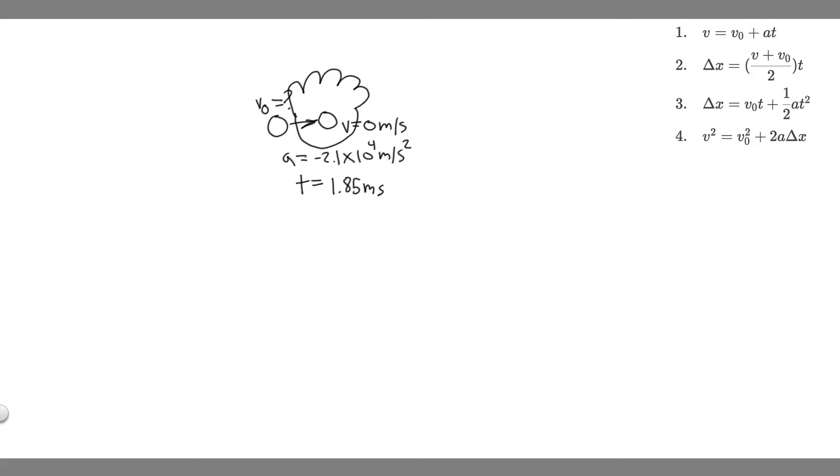In this problem, we're told a well-thrown ball is caught in a well-padded mitt. If the deceleration of the ball is 2.1 times 10 to the 4 meters per second squared and 1.85 milliseconds (1 millisecond equals 10 to the minus 3 seconds) elapses from the time the ball first touches the mitt until it stops, what is the initial velocity of the ball?